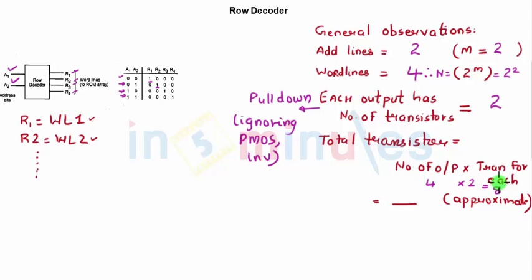We can easily put a general thing for this. The number of outputs or number of word lines is nothing but 2 raised to m times the transistor for each, which is nothing but m.